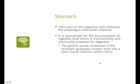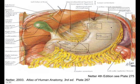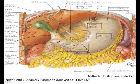The stomach is the major part of the digestive tract, specialized for accumulation of ingested food, where it mechanically and chemically prepares it for digestion. Gastric juices gradually convert food into a semi-liquid mixture called chyme. You need to know these four parts of the stomach: the cardiac region — first part where the esophagus enters, usually found around the level of T10; the fundus — the superior part that extends to the left of the diaphragm; the body — the main part; and the pyloric region where it joins the small intestine. If you palpate around T10 and you reproduce your patient's symptoms, you have to consider reflux as a possible cause for their pain.